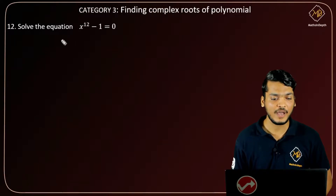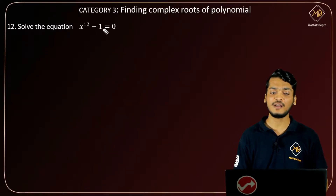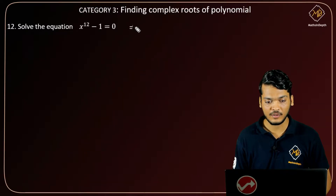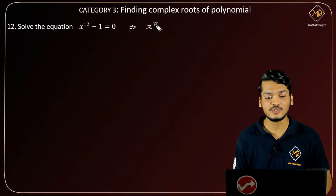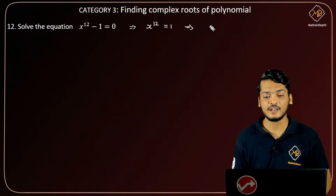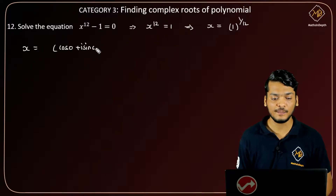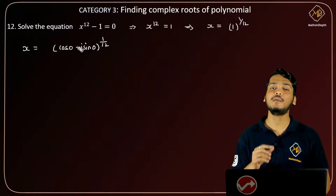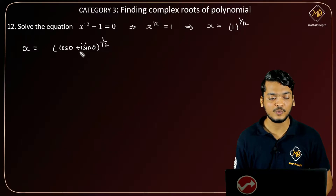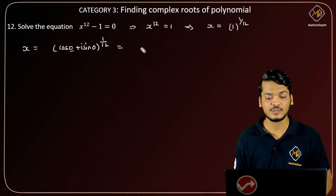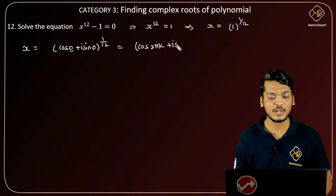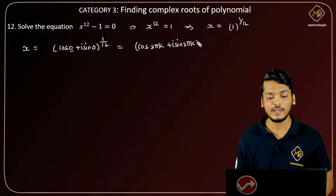In question 12 of category 3, we have to solve the equation x^12 - 1 = 0, that is x^12 = 1. This can be written as x = 1^(1/12). Now I will write 1 in its polar form: cos(0) + i·sin(0), raised to 1/12. I will generalize by adding 2πk to the angle, so this becomes cos(2πk) + i·sin(2πk), all raised to 1/12.